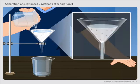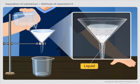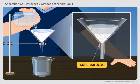A filter paper is folded in the form of a cone. This folded filter paper is fixed onto a funnel. The mixture to be separated is then poured on the filter paper.